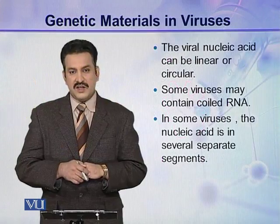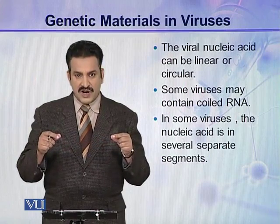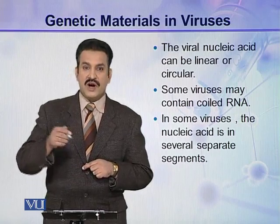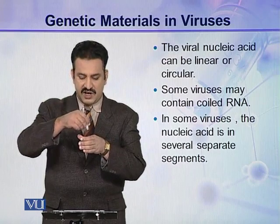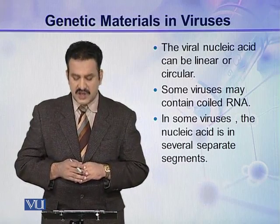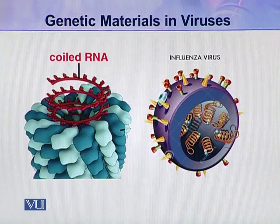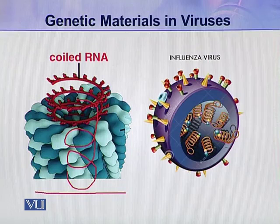The viral nucleic acid can be linear or circular — it may be a linear molecule of RNA or DNA, or it may be circular. Some viruses may contain coiled RNA; the RNA inside the capsid is coiled. While in some viruses, the nucleic acid is in several separate segments. For example, in this virus you can see a single coiled molecule of RNA present inside the capsid.